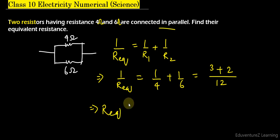So, R equivalent is equal to 12 upon 5. 12 upon 5 is equal to 2.4 ohm.